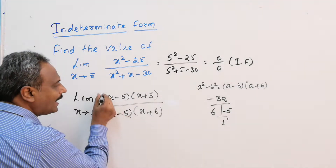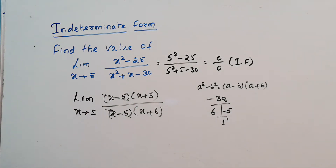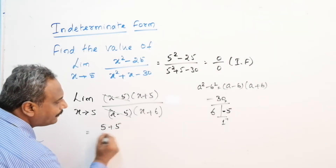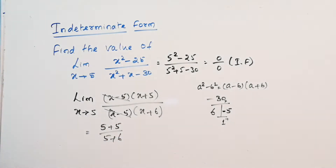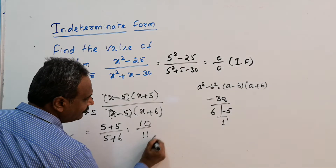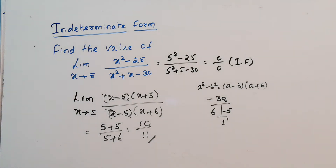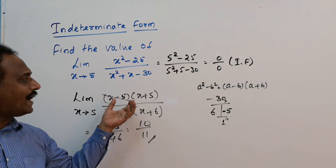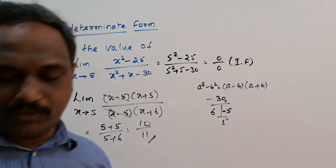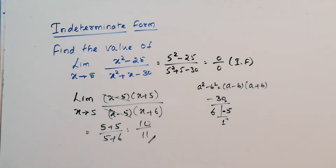We have (x minus 5) as a common factor in both numerator and denominator, so we cancel it. Now substituting x equals 5: the result is (5 plus 5) divided by (5 plus 6), which is 10 divided by 11. The basic idea is: when we have indeterminate form, we factorize and find the solution.